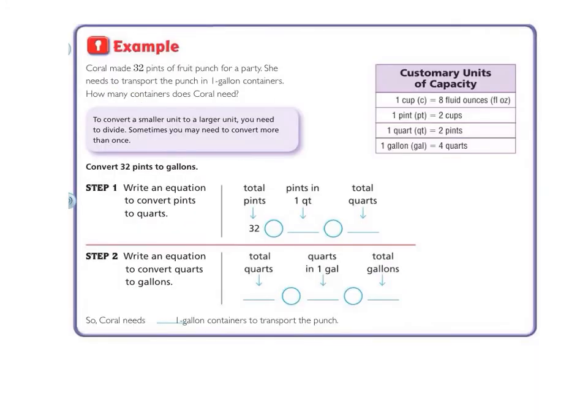Moving on to our example. The first thing that you should do is copy down this box so that you can have it for reference, because it is something that you will want to have. Our example says, Coral made 32 pints of fruit punch for a party. She needs to transport the fruit punch in 1 gallon containers. How many containers does Coral need?